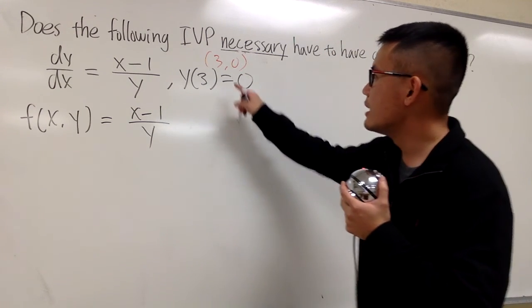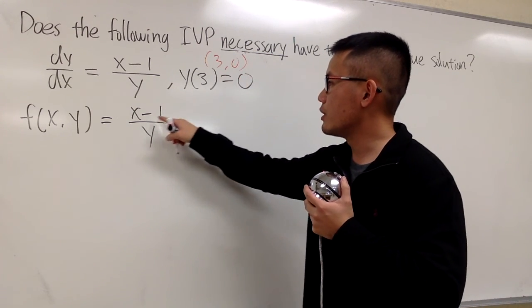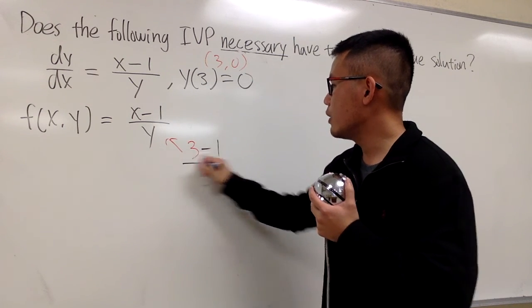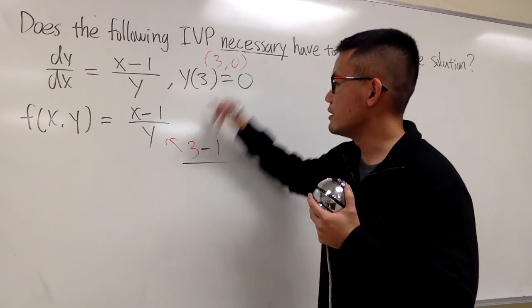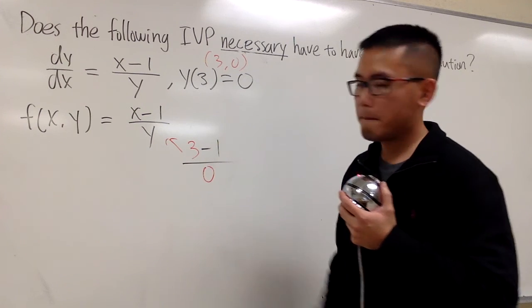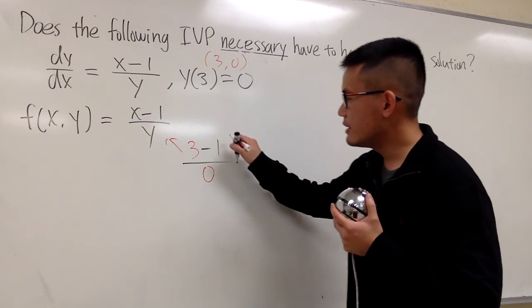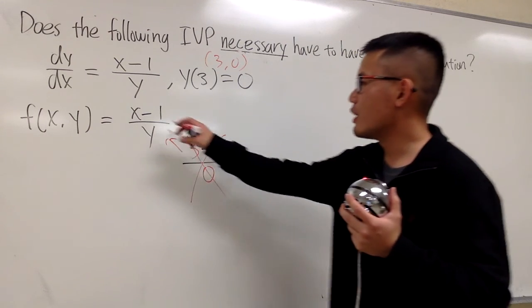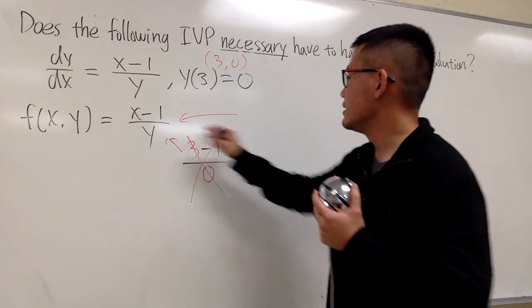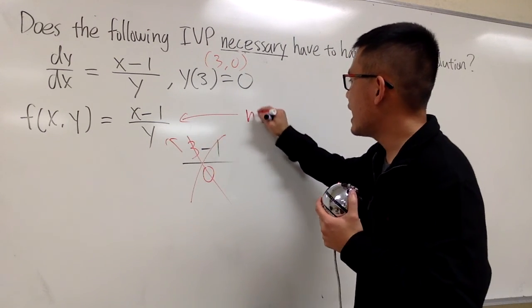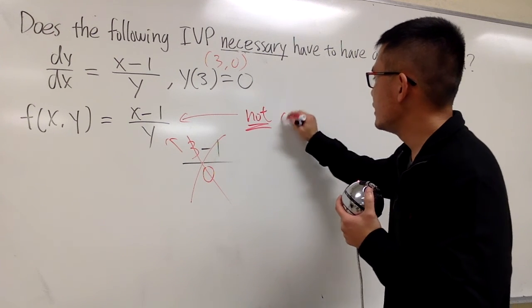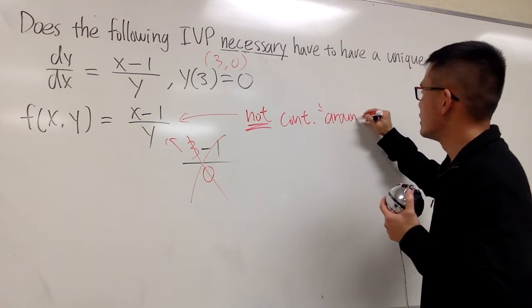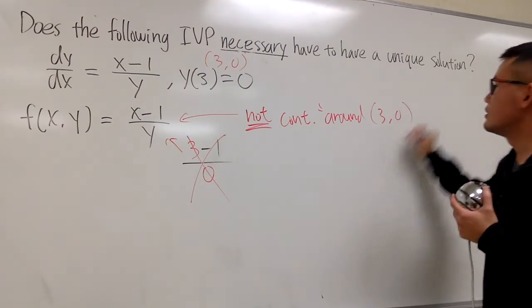Well, you see that if I plug in 3 for x, we will have 3 on the top minus 1, over — plug in 3 in here. This is undefined, right? We have trouble already. So this is not continuous around (3, 0).